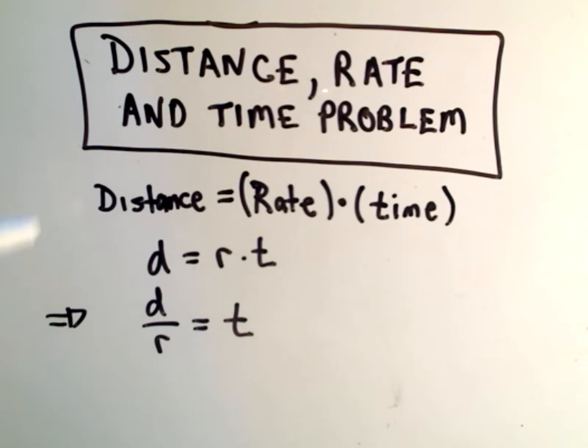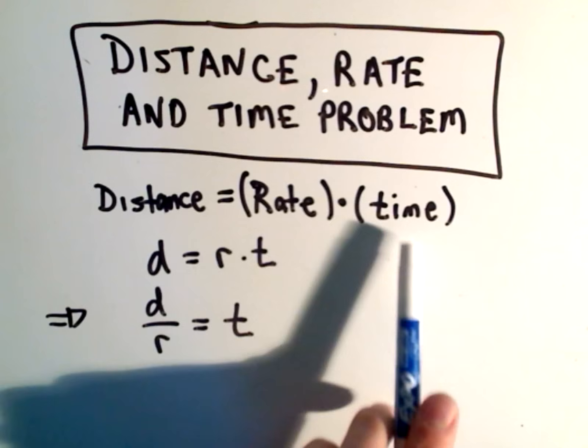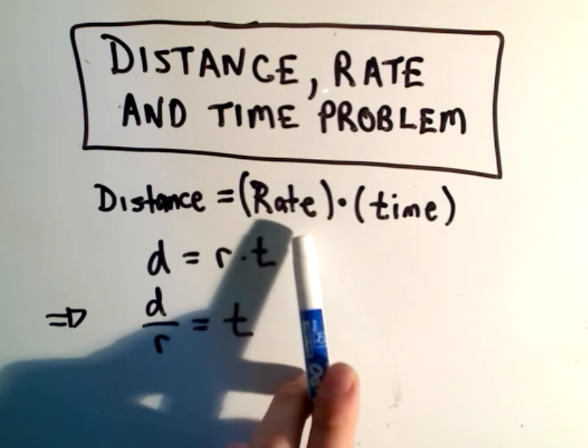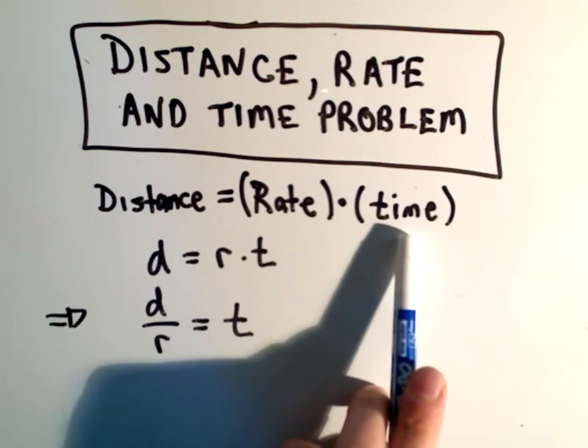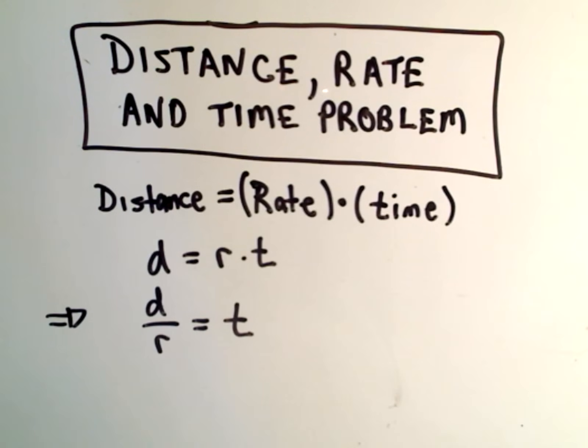So remember, or maybe this is the first time you've seen it, we define distance to equal rate times time, right? I mean, if you go 60 miles an hour for 3 hours, you've gone 180 miles.